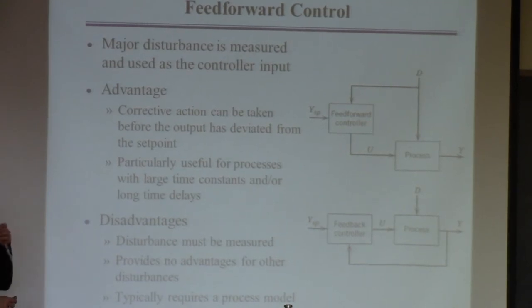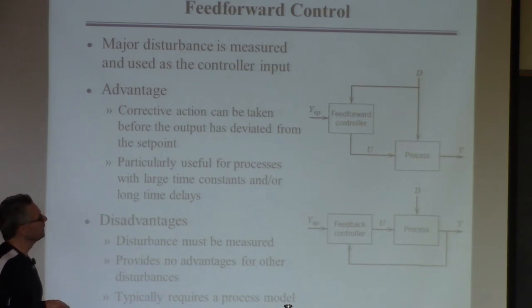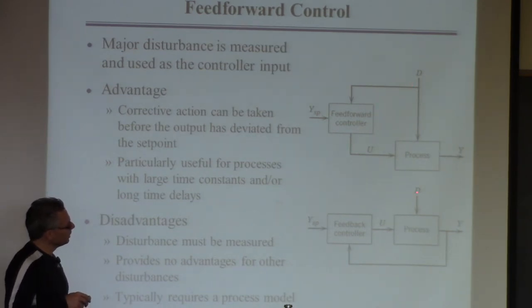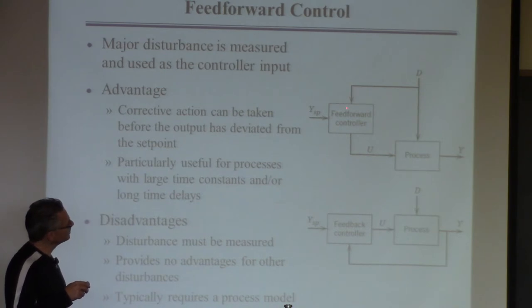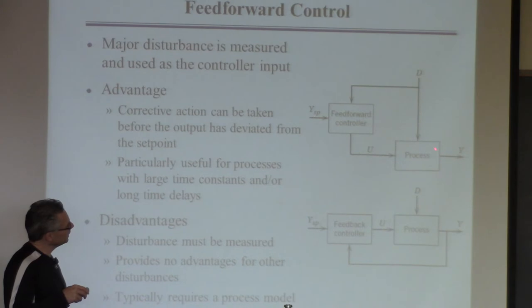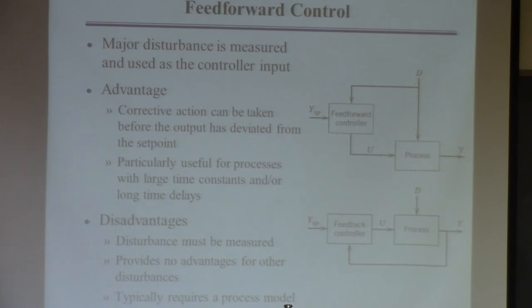The idea of feedforward control is this: here's our typical feedback control - you measure the output, compare it to the set point, adjust some input. Feedforward control is all about measuring the disturbance you think is causing the problem. The disturbance affects the system and causes the output to deviate, but in feedforward we measure the disturbance and try to counteract its effect right away instead of waiting for it to deviate. We're trying to generate a signal that will cancel the effect of the disturbance - measure the disturbance instead of the controlled output.